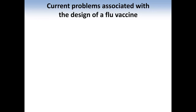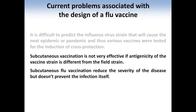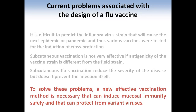We are developing a more effective vaccine, which is the mucosal vaccine administered intranasally. The background of this development is as follows: there are current problems associated with the design of the flu vaccine. It is difficult to predict the influenza virus strain that will cause the next epidemic or pandemic, and thus various vaccines were tested for the induction of cross-protection. Subcutaneous vaccination is not very effective if the antigenicity of the vaccine strain is different from the field strain, and subcutaneous flu vaccine reduces the severity of the disease but doesn't prevent the infection itself. To solve these problems, a new effective vaccination method is necessary that can induce mucosal immunity safely and can protect from variant viruses.